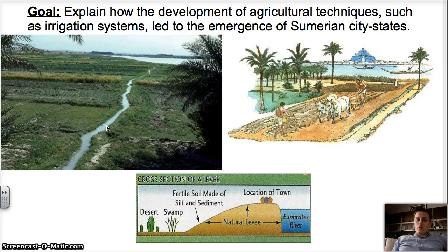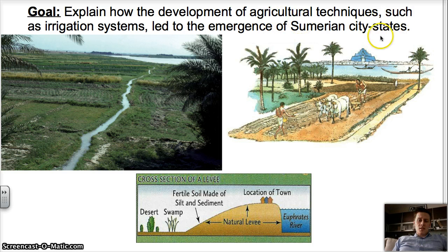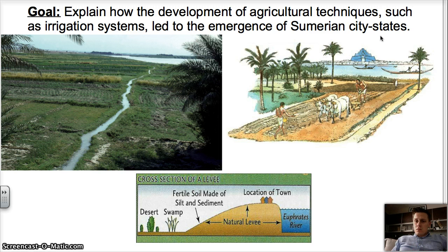When we talk agricultural, we're talking about farming — growing crops and raising animals. And when we talk city-states, we're talking about independent cities that have their own religion, laws, and government, completely independent of the other cities surrounding them.